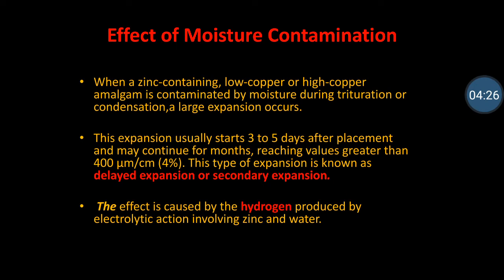Regarding moisture contamination: when a zinc-containing low-copper or high-copper amalgam is contaminated by moisture during trituration or condensation, a large expansion occurs. This delayed expansion usually starts 3 to 5 days after placement and can extend over several months, reaching greater than 4 micrometers per centimeter. When zinc contacts water, hydrogen gas is liberated and accumulates within the material, causing this secondary or delayed expansion.